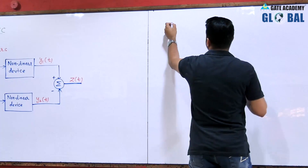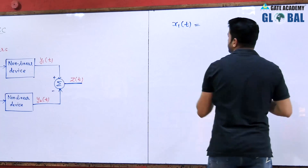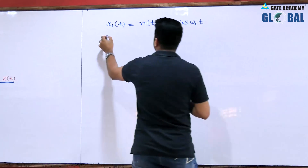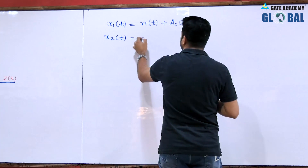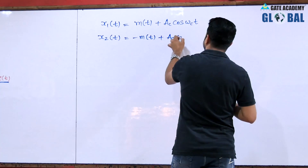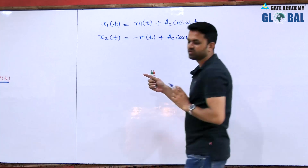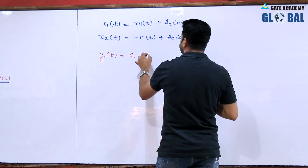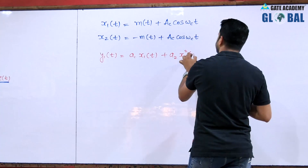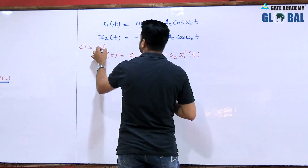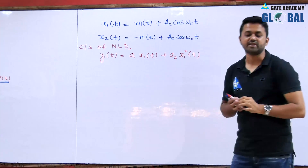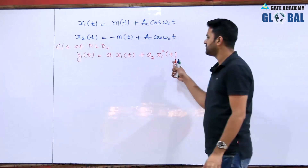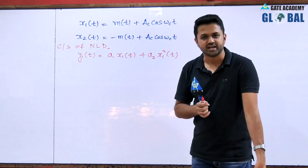From the upper path, x1(t) = m(t) + Ac·cos(ωc·t), and from the lower path x2(t) = −m(t) + Ac·cos(ωc·t). The signal passes through the non-linear device, which has characteristics y1(t) = a1·x1(t) + a2·x1²(t). We have seen this before in the case of the square law modulator and square law demodulator.